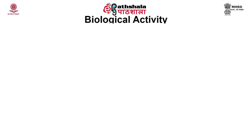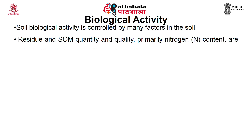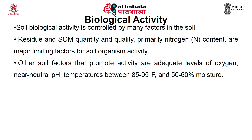Soil biological activity is controlled by many factors in the soil. Residue and soil organic matter content — quantity and quality, primarily nitrogen content — are major limiting factors for soil organism activity. Other soil factors that promote activity are adequate levels of oxygen, near-neutral pH, temperature between 85 to 95 degrees Fahrenheit, and 50 to 60 percent moisture. A combination of these factors results in maximum activity. Although some organisms have adapted to extreme environmental conditions, overall activity generally diminishes when conditions fall outside of these ideal ranges.